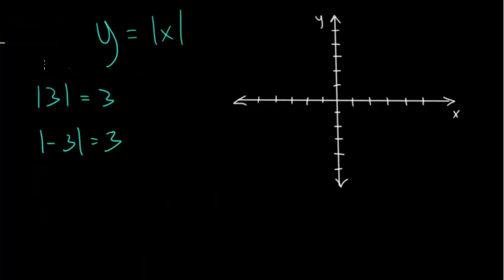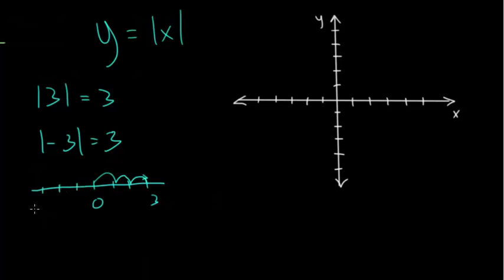One way to think about why this is the case: absolute value is essentially just asking, if we're on the number line, how far away are these numbers from zero? The number three is three units away, but the number negative three is also three units away from zero. So that's why they're both equal to three. When we plug in zero, the distance that zero is from zero is zero, so we get the origin.